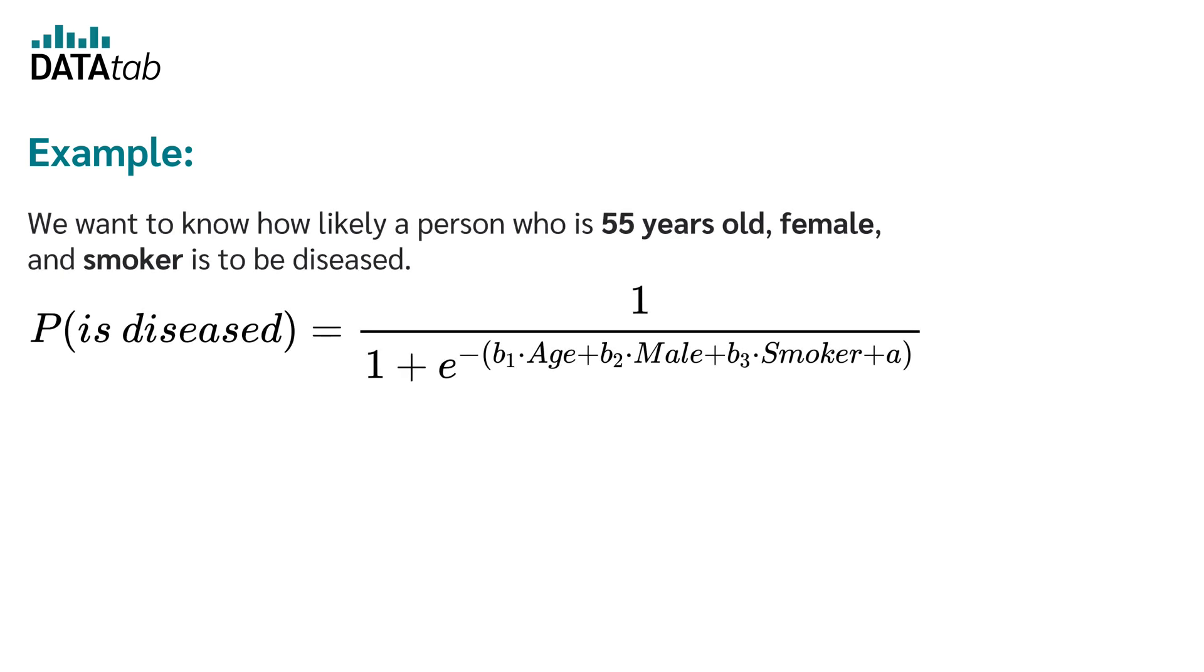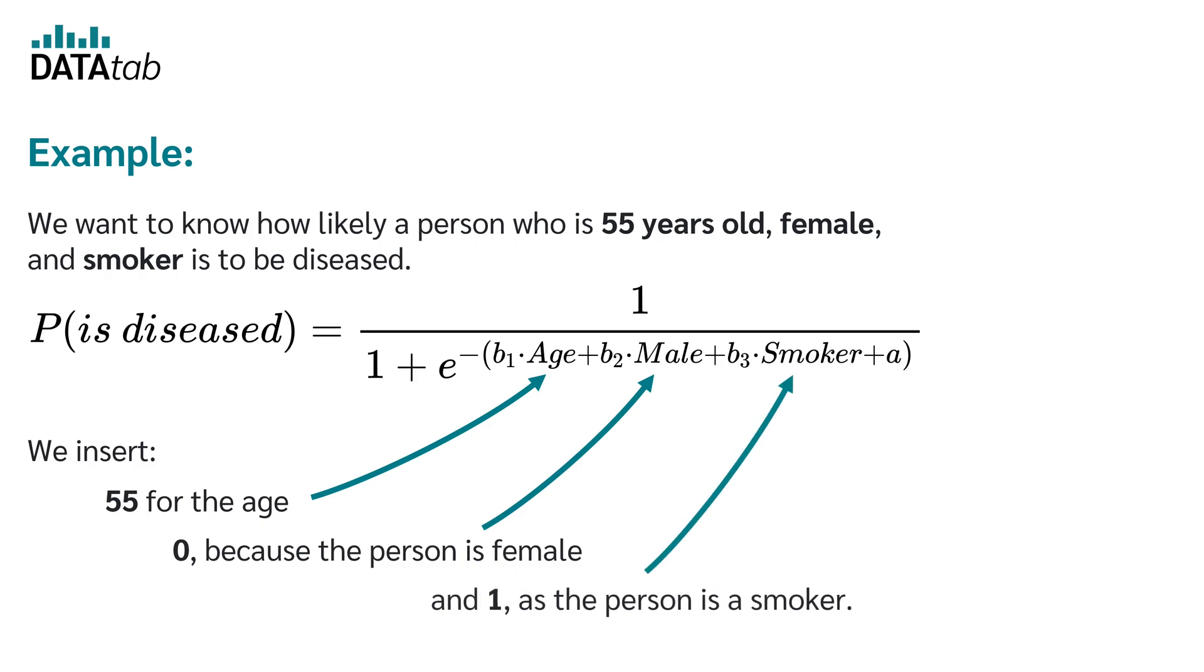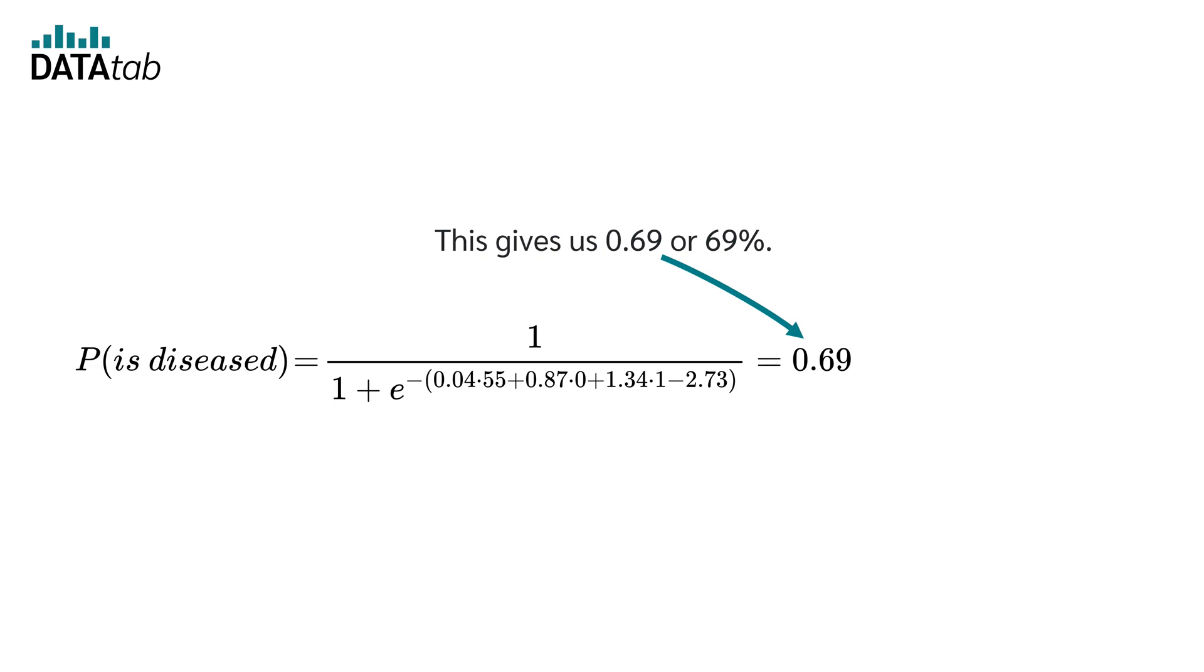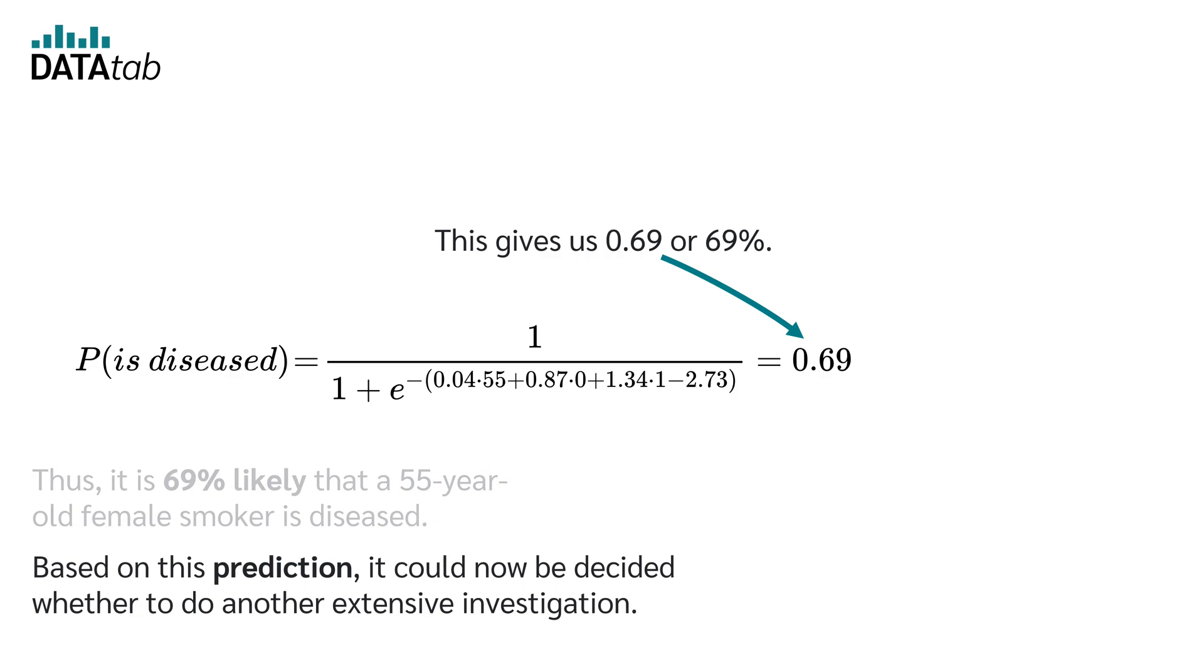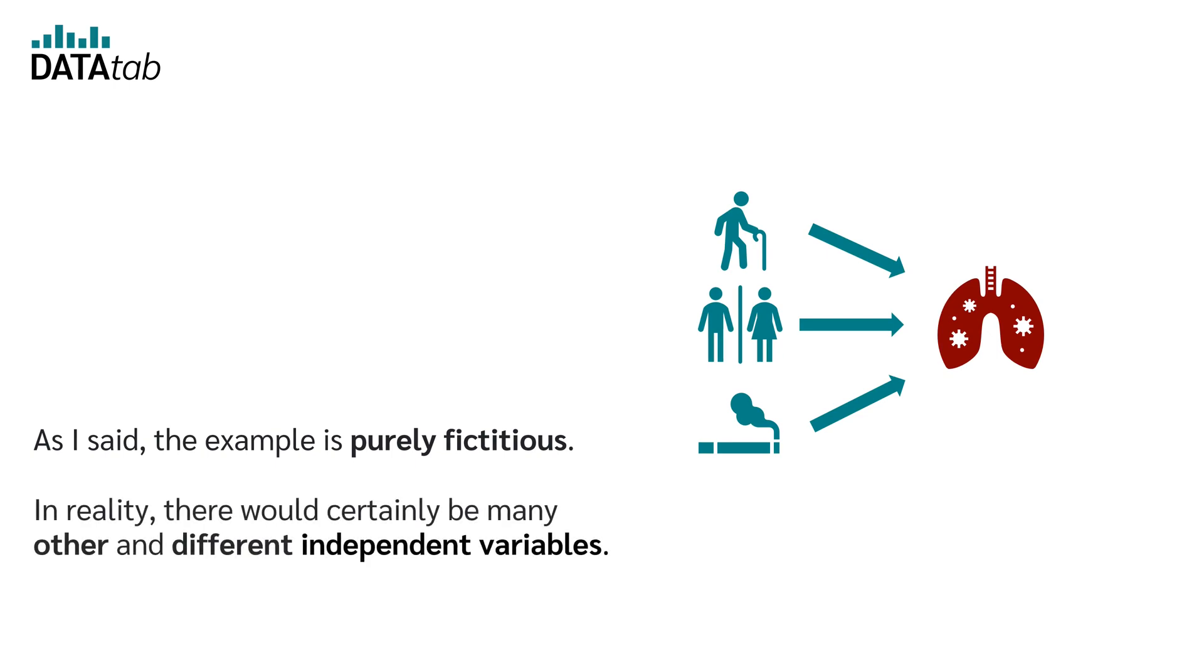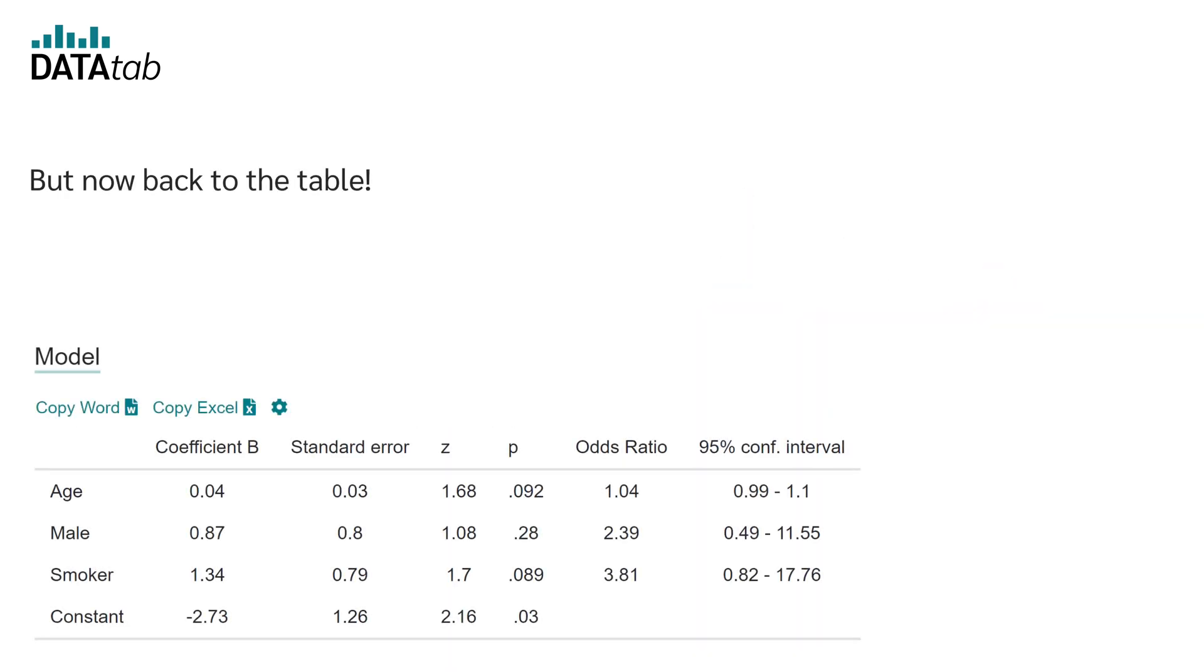An example. We want to know how likely a person who is 55 years old, female and smoker is to be diseased. We insert 55 for the age, 0 because the person is female and 1 as the person is a smoker. This gives us 0.69 or 69%. Thus, it is 69% likely that a 55-year-old female smoker is diseased. Based on this prediction, it could now be decided whether to do another extensive investigation. As I said, the example is purely fictitious. In reality, there would certainly be many other and different independent variables.